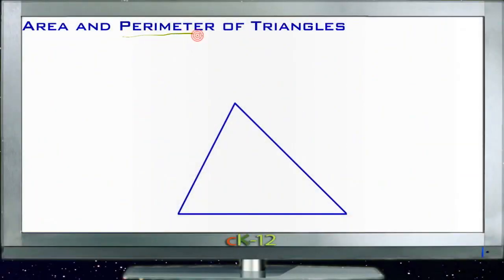Calculating the perimeter of a triangle is actually pretty simple. Just like any other shape, you just basically take the distance around the outside edge. So if we call our sides here 1, 2, and 3, we'd just add side 1 plus side 2 plus side 3 to get the perimeter. That's pretty straightforward.